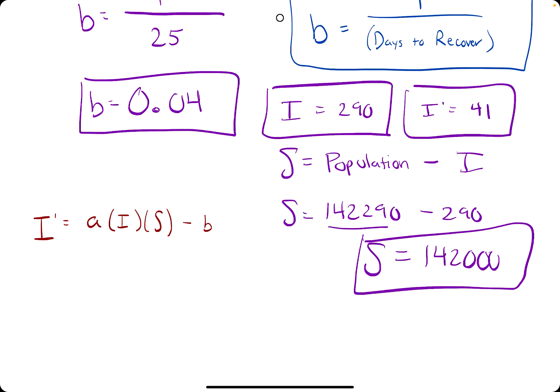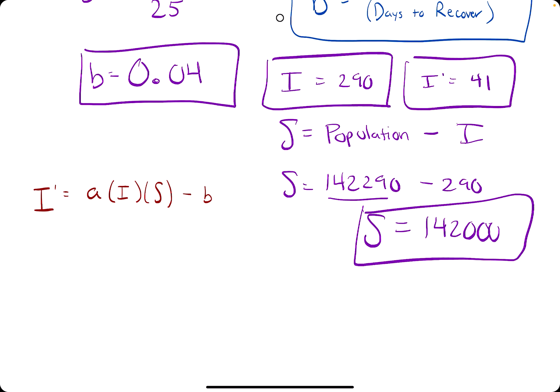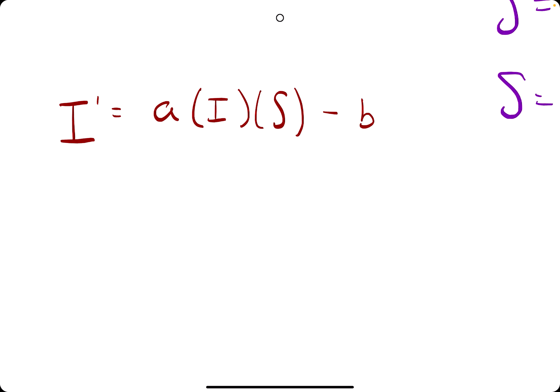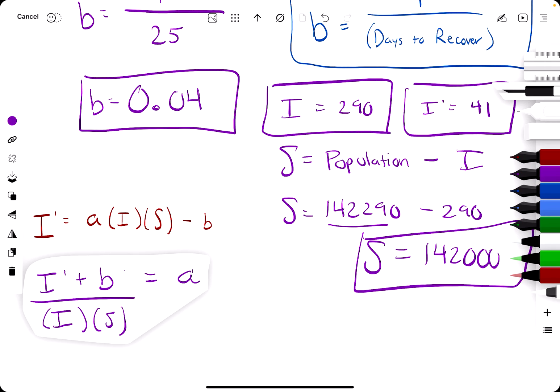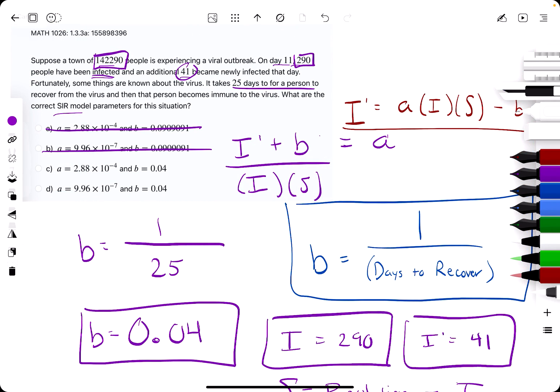So what I'll do first, actually, is probably solve this for A, and then we'll plug in the value. So to solve for A here, we're going to add B, and then, so I'll just do this, A times I times S. In order to get A by itself, we're going to divide by I and S simultaneously. So we have A is equal to I prime plus B over I times S. So really, you could jump straight to this equation if you wanted to at the very start.